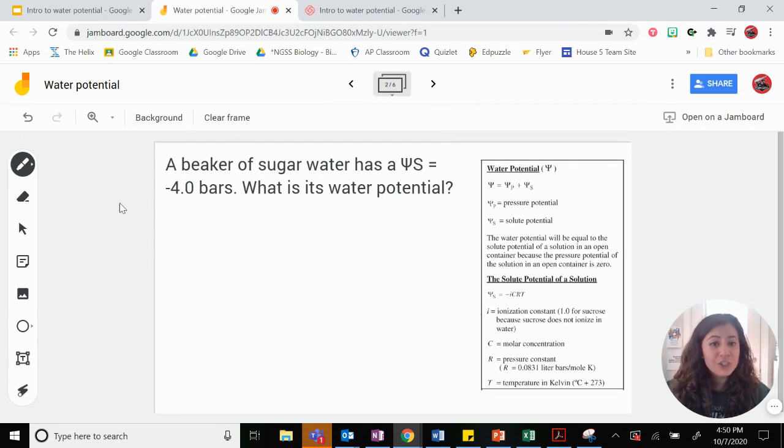A beaker of sugar water has a solute potential of negative 4 bars. What is its water potential? So let's start by defining our terms. We've got our water potential formula. It told us that solute potential is negative 4. But what's pressure potential? It didn't tell us, right?